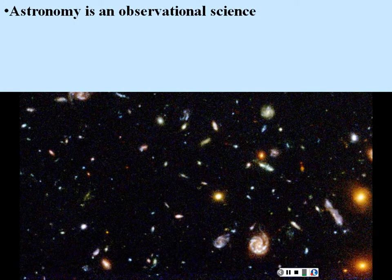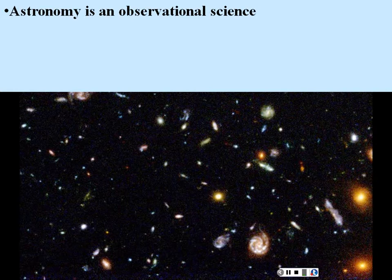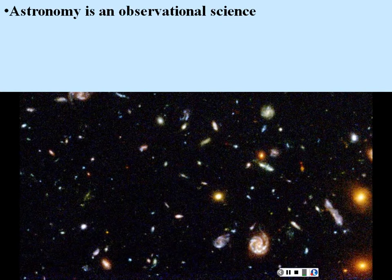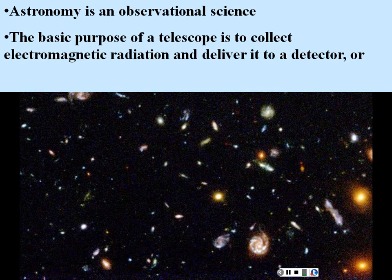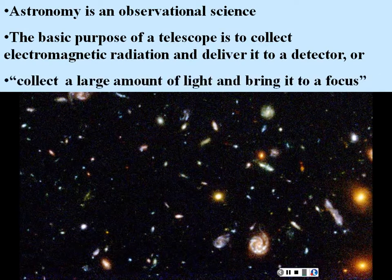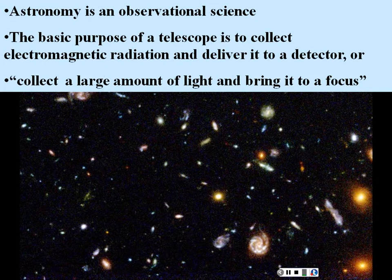Astronomy itself is an observational science. It's based on the light that gets to us. Most of these places, at least in our lifetime, we'll never get to — it's just too far away. So everything we get is through the observation of light. Our basic purpose for a telescope is to collect electromagnetic radiation and deliver that to a detector, or in common words, to collect a large amount of light and bring it to a focus so that we can see it and analyze it.